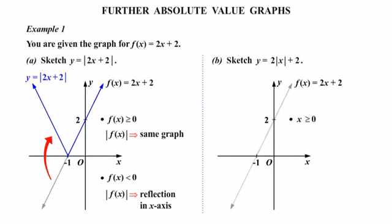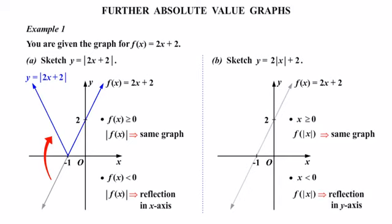First of all, where x is greater than or equal to 0, f(|x|) gives us the same graph. That's this part of the graph here, so the absolute value graph — f(|x|) — is the same graph, and we draw that in again.